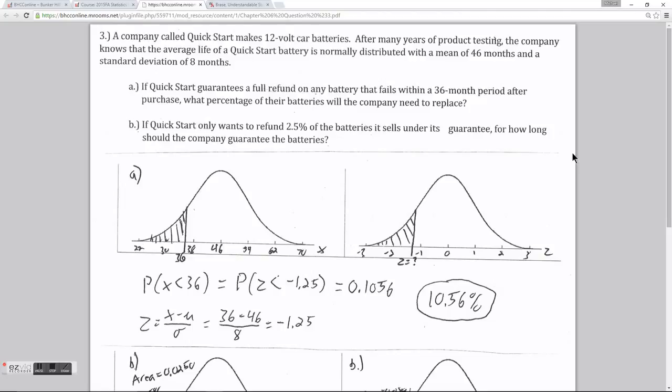Example 3 is sort of a combination of examples 1 and 2. In this question, we have a company that makes batteries, and we know that the batteries have an average lifespan that is normally distributed. They have a mean of 46 months and a standard deviation of 8 months.